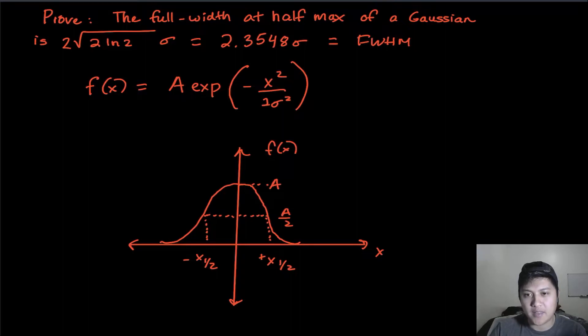specifically that the full width at half max of a Gaussian is given by this number down here, 2.3548, or 2 times the square root of 2 ln of 2, times the standard deviation of the Gaussian, sigma.